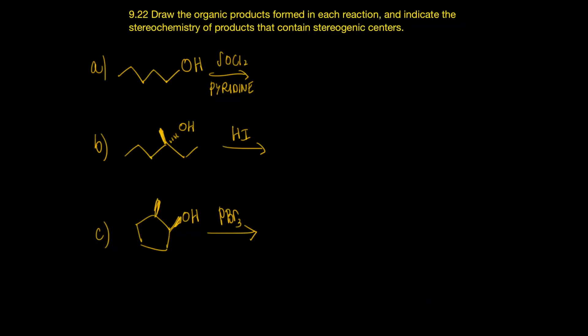Here we're asked to draw the organic products formed in each reaction and then indicate the stereochemistry of the products that contain stereogenic centers. So you have to be really careful to look at the starting alcohol and then also classify the alcohol as primary, secondary, or tertiary. Then look at the reagents and see what's going to happen. Is it SN1 or SN2 or what's going on?